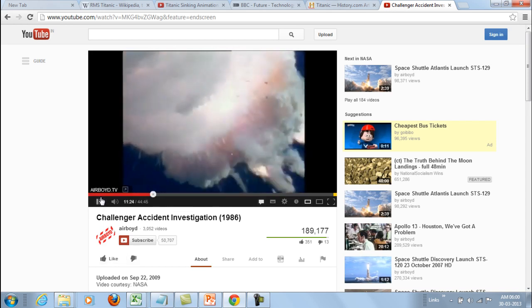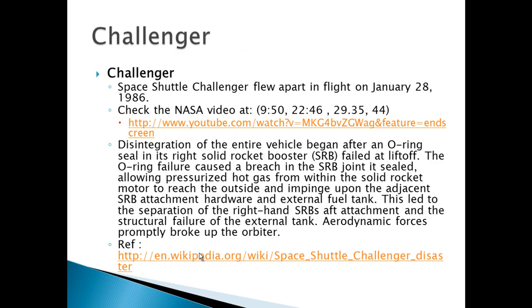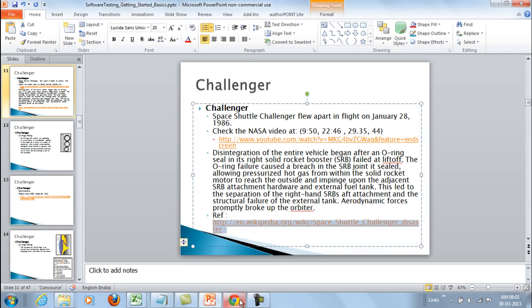And then it blew up. After much research, it was found that the disintegration began after an O-ring seal in the right solid rocket booster failed at lift off. The O-ring caused a breach in the SRB joint, allowing pressurized hot gas from within the solid rocket motor to reach outside and impinge upon the adjacent SRB attachment hardware and external fuel tank. This led to separation of the right-hand SRB aft attachment, structural failure of the external tank, and aerodynamic forces that broke apart the orbiter.